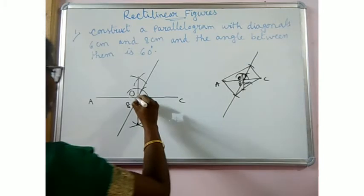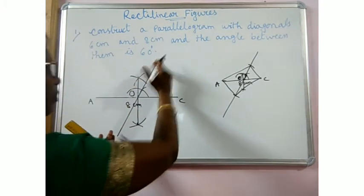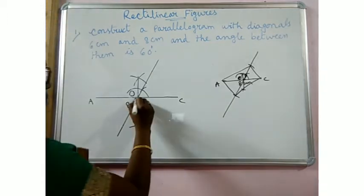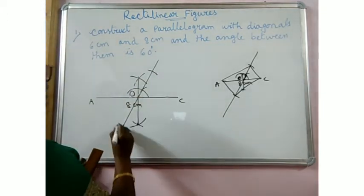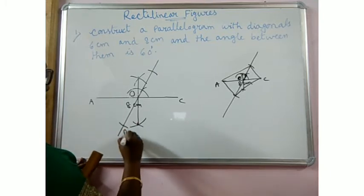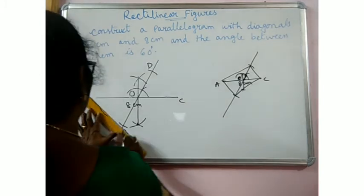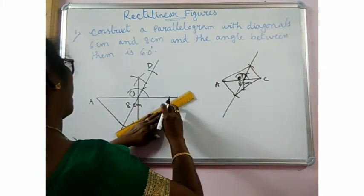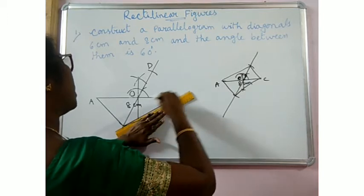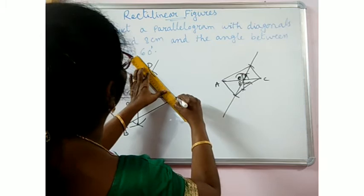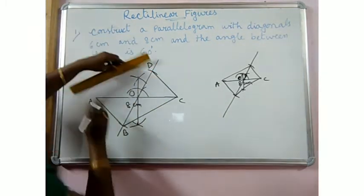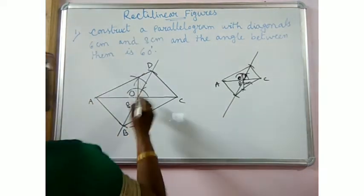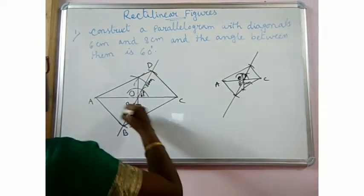Now from O, on this side you have to give 3cm, and here also you have to give 3cm, so that this diagonal will be 3 plus 3 = 6cm. Give a 3cm arc on each side. Name these points B and D. Join A, B, B, C, C, D, and A, D. This 60 degree angle has been constructed, with 3cm on each side. ABCD is the required parallelogram.